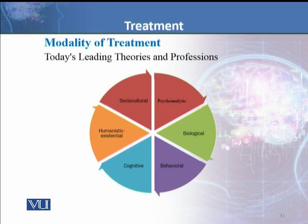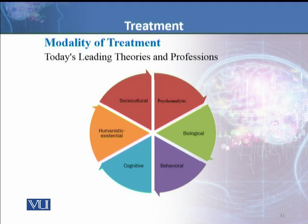Biological treatment refers to medication — pharmacological treatment is also called biological treatment. Then there is the behavioral model: behavioral theories discuss behavior therapy, which includes techniques based on classical conditioning, operant conditioning, or a mixture of both. Behavioristic techniques believe in changing behavior through reinforcement or by manipulating the environment — using reward and punishment to bring change in the client's behavior.